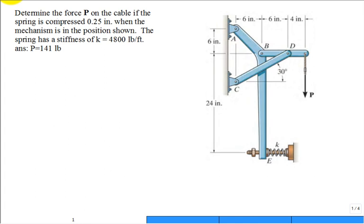Determine the force P on the cable if the spring is compressed 0.25 inch. When the mechanism is in the position shown, the spring has a stiffness of 4800 pounds per foot, and the answer is P needs to be 141 pounds. That's the answer.